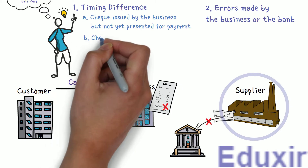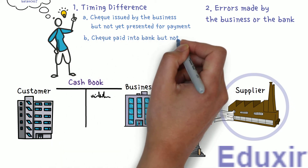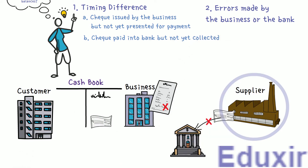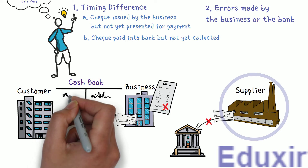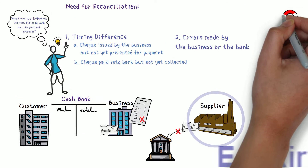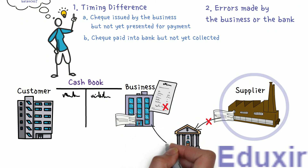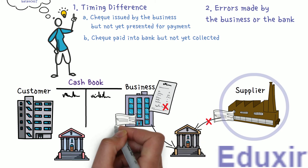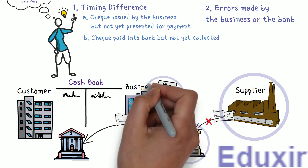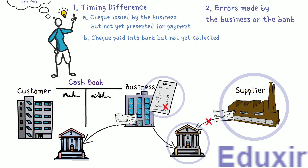The next reason is checks paid into the bank but not yet collected. When the business receives checks from its customers or debtors, they are immediately recorded on the debit side of the cashbook. These checks could be from a bank in a different city or branch. In such cases, the bank may not have collected the check amount by the time the bank statement is received, causing a difference between the cashbook and passbook balances.